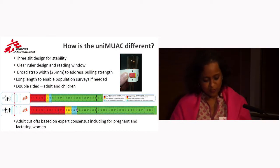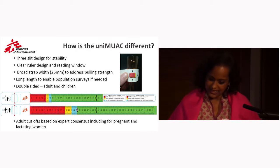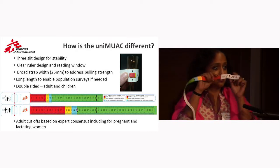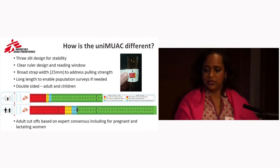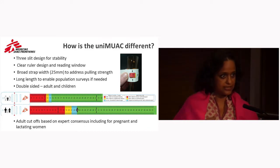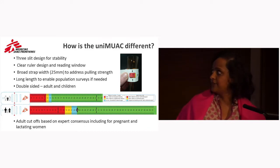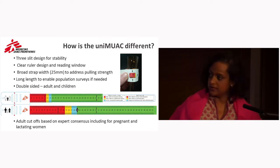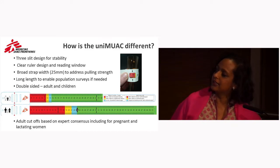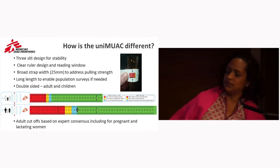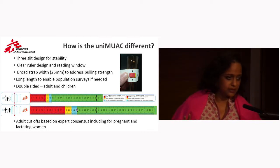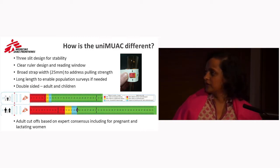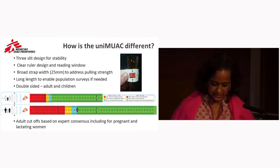So how is the uni-MUAC different? In essence, it has a three-slit design for stability, a very clear ruler and a reading window, and a broad strap width to address pulling strength — you can't pull it too tight — and for more stability. It's double-sided: one side for adults, which you can see from the blocked-out figures, including a conveniently placed pregnant woman figure along one side, and one side for children. These adult cut-offs were based on expert consensus, including for pregnant and lactating women.